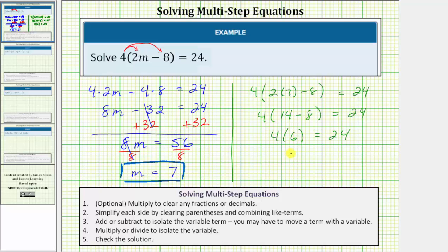And four times six is twenty-four. This simplifies to twenty-four equals twenty-four, which is true. Verifying our solution, m equals seven, is correct. I hope you found this helpful.